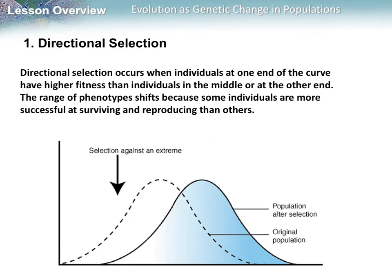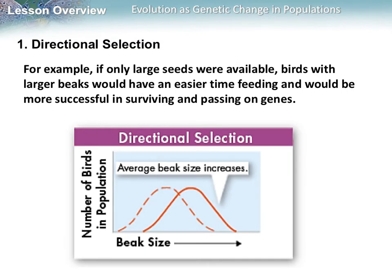Directional selection is the first way polygenic traits are affected. This occurs when individuals at one end of the curve have higher fitness than individuals in the middle or at the other end, shifting phenotypes toward one end. For example, beak size is a polygenic trait. If only large seeds are available, birds with larger beaks have an easier time feeding and are more successful in surviving and passing on their genes. Over time, we see more birds with larger beaks and fewer with smaller beaks.